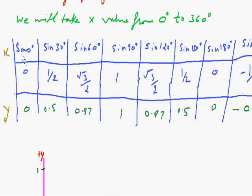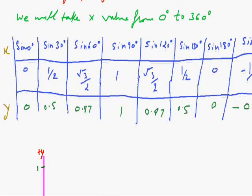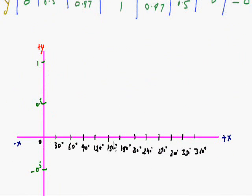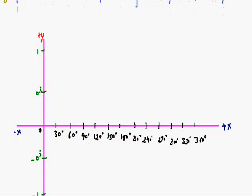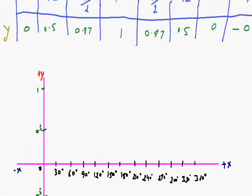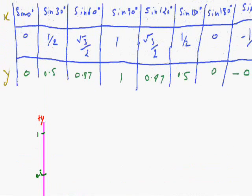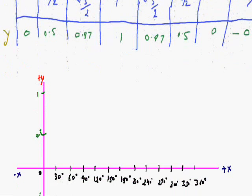This is x and this is y. We take the values from 0 degree to 360 degree. This is x plus, this is minus x, and this is y plus and this is minus y. So first value of sin 0 degree, y will be 0. This will be first value.